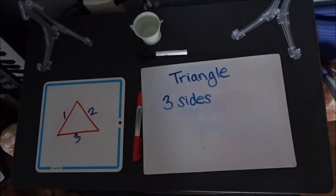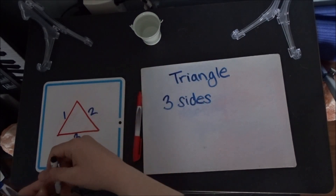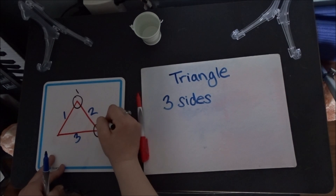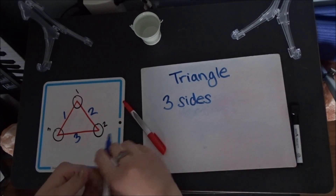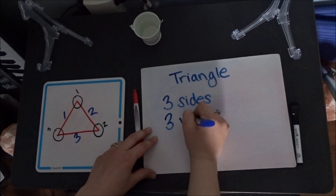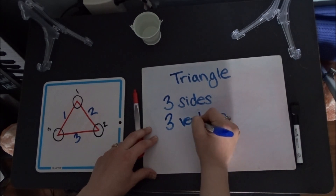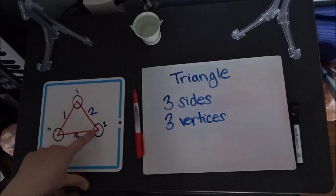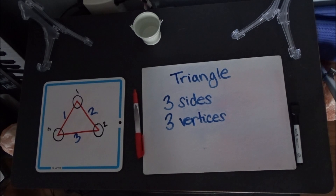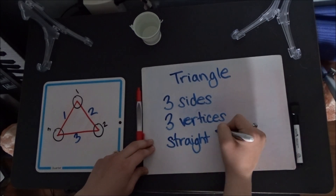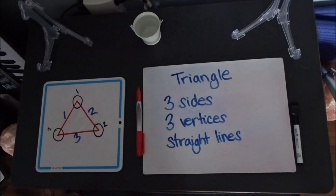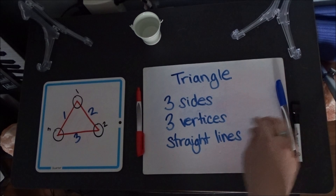How many vertices does our triangle have — how many spots where the two lines connect, or how many corners? One, two, three. So we have three vertices, or three spots where those sides meet. Are we using straight lines or curved lines? If you said straight lines, you would be right. Good job!